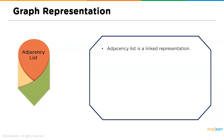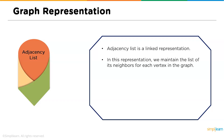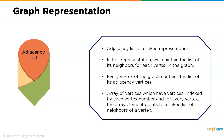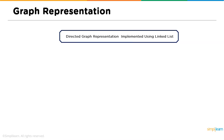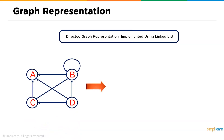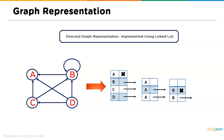Now let's look into the adjacency list. Adjacency list is a linked representation where we maintain a list of neighbors for each vertex in the graph. Every vertex contains a list of its adjacent vertices. The array of vertices is indexed by vertex number, and for every vertex the array element points to the linked list of its neighbors. For example, in a directed graph, A is not connected to anything so its next pointer is null, but B is connected to A, C is connected to A, and D is also connected to A.